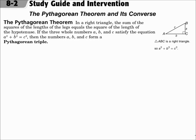In a right triangle, the sum of the squares of the lengths of the legs equals the square of the length of the hypotenuse. So with legs a and b and hypotenuse c, a squared plus b squared equals c squared.